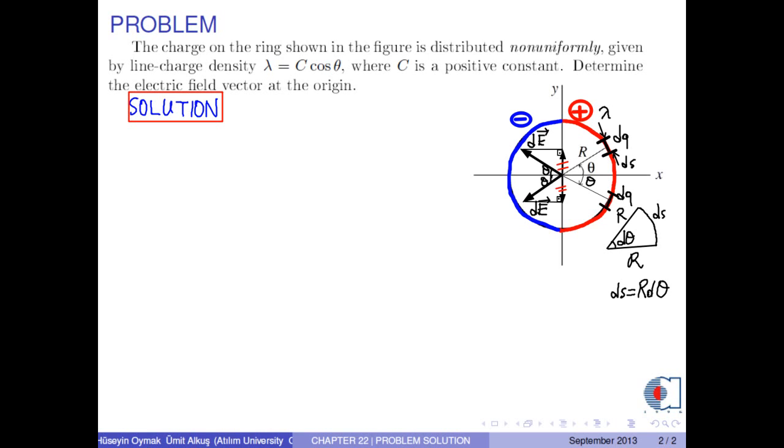As you see, their y components cancel each other. So, we are left with their x-component dE times cosine theta.